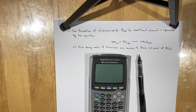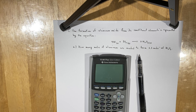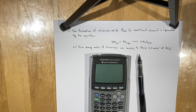Hello, honors chemistry students. Today I would like to review with you the first of many problems on stoichiometry that you're going to solve in honors chemistry. Stoichiometry is a topic which really involves proportional thinking, just as you would in a kitchen. It involves establishing mathematical relationships between reactants and their products, and in essence, it's based on proportional reasoning.